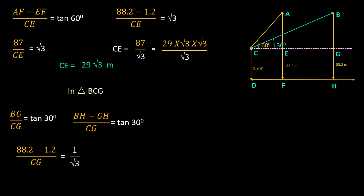BH is height of the balloon. It is 88.2 and GH is the side of the rectangle that represents the height of the girl. That is equal to 1.2 meter. When 1.2 subtracted from 88.2, we have 87 and CG in the denominator and in RHS we have 1 by root 3. On cross multiplication, we have CG equals 87 root 3.